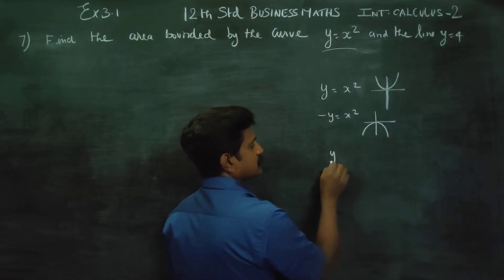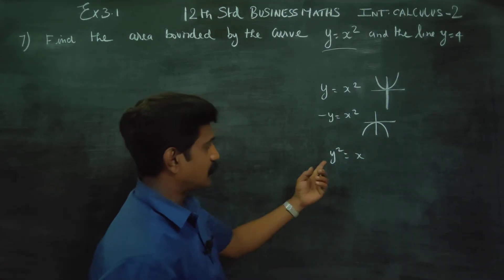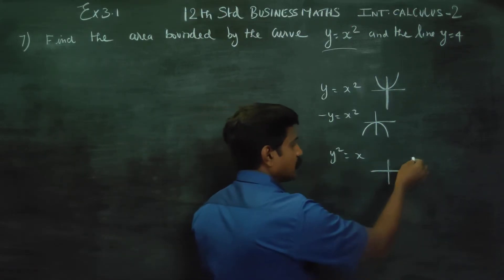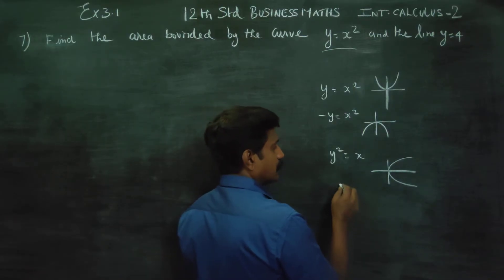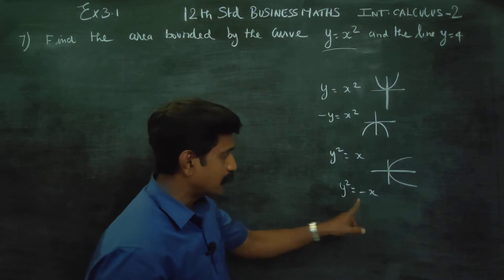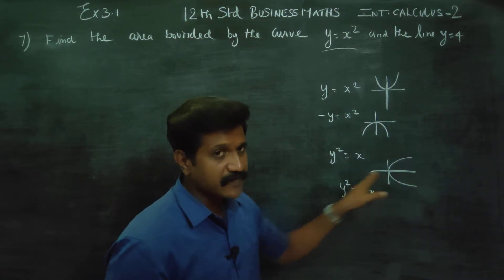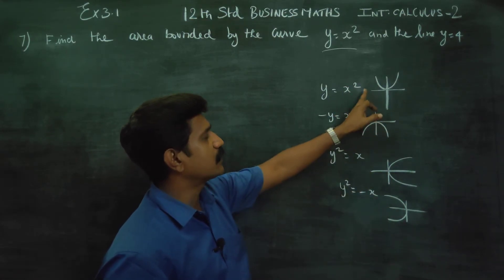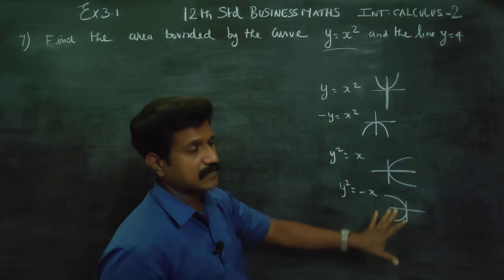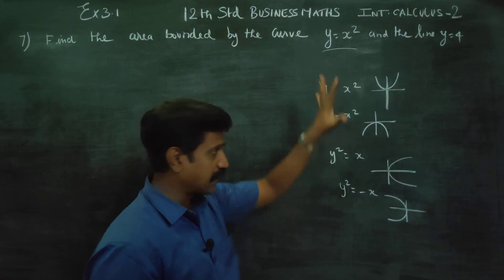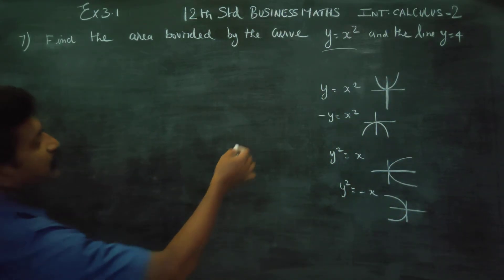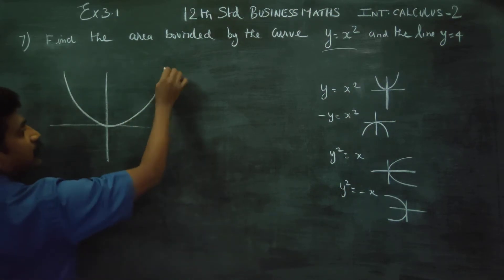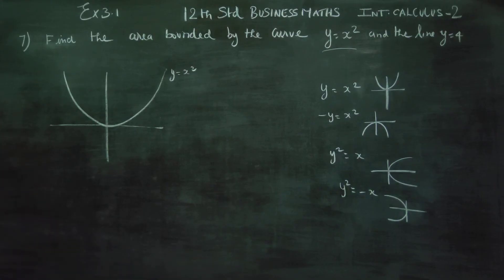Y square is equal to y to power 2. This is positive. Y square is equal to minus x. The x-axis is equal to y-axis. Plus five, plus four, plus three, plus two. The xy is the main rule. Y is equal to x square — this is called a parabola.